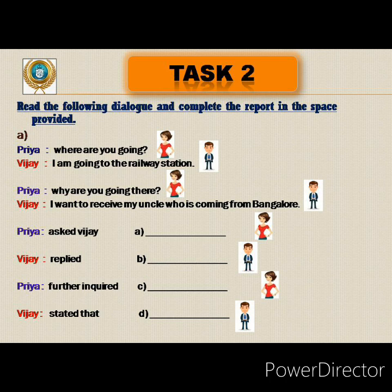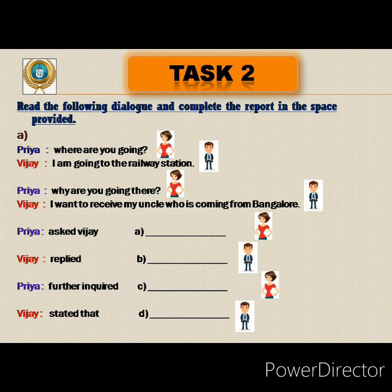Task 2. Read the following dialogue and complete the report in the space provided. The dialogue is between Priya and Vijay. Priya asks: 'Where are you going?' Vijay replies: 'I am going to the railway station.' Priya then asks: 'Why are you going there?' Vijay answers: 'I want to receive my uncle who is coming from Bangalore.' Priya asked Vijay where he was going. In indirect speech, the question becomes a statement: where he was going.